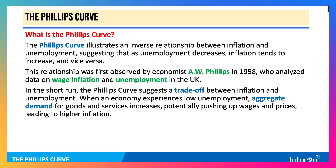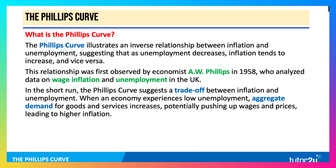In the short run, the Phillips Curve suggests a potential trade-off between two key macro objectives. When an economy experiences low and falling unemployment, rising aggregate demand for goods and services can potentially push up wages and prices, leading to higher inflation.